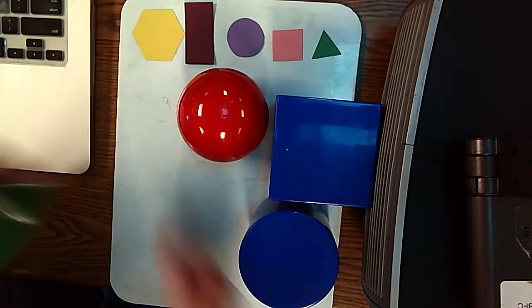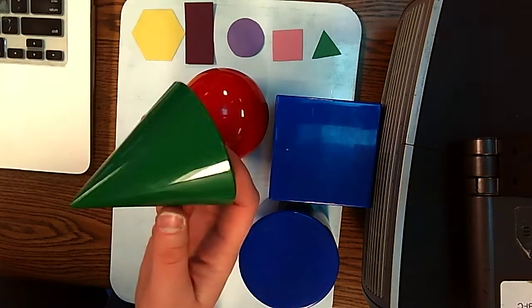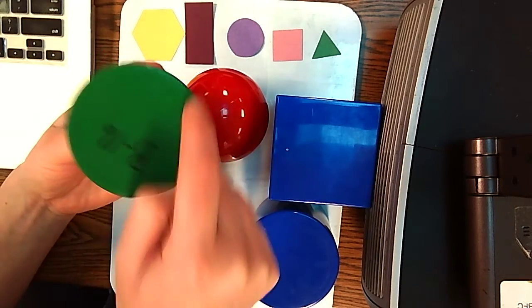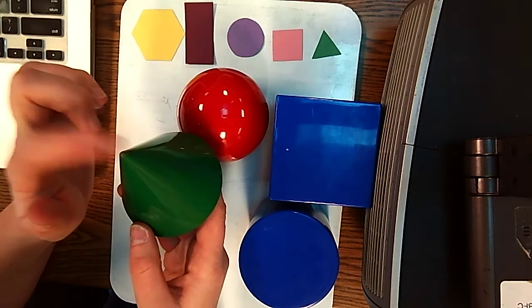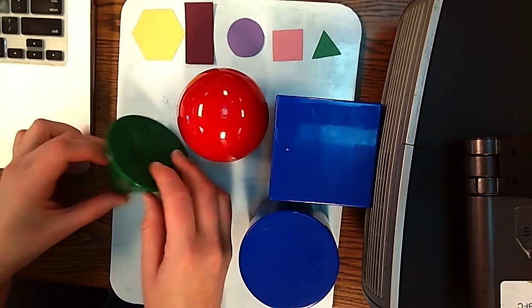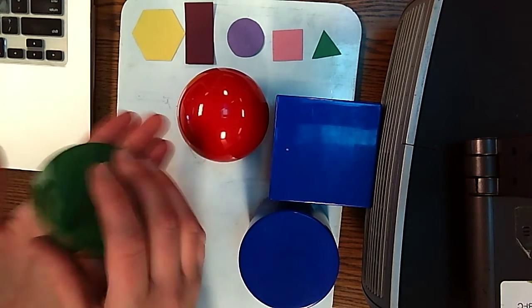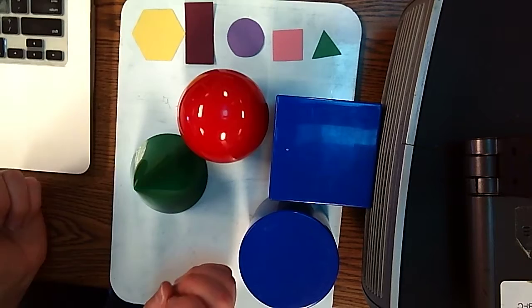So the last one we're going to talk about is our shape of the day, which is a cone. Our cone also has a circle face and one vertices at the top. If I put it on the side, it can roll. But if I put it on the face, or if it's down, it would be called the base. It won't go anywhere.